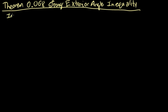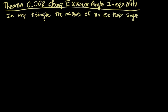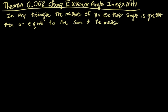It says that in any triangle, the measure of an exterior angle is greater than or equal to the sum of the measures of the remote interior angles.